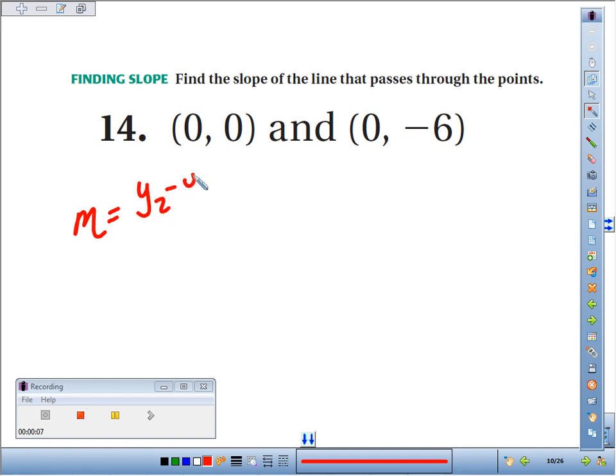M, our slope, is rise over run. We find the rise by finding the change in y. Run is found by finding the change in x.